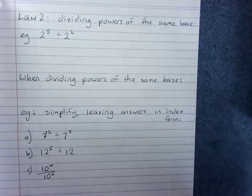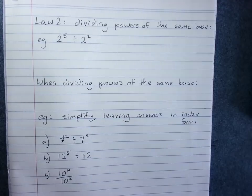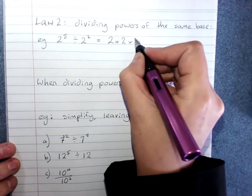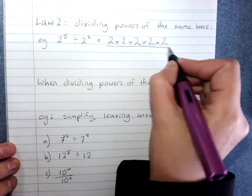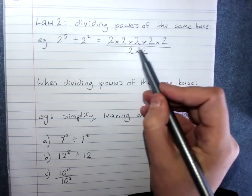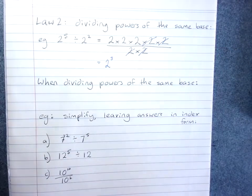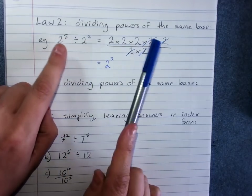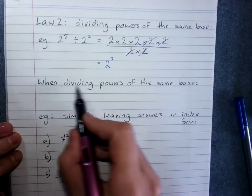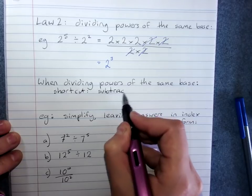Index law 2 is dividing powers of the same base. For example, 2 to the power of 5 divided by 2 to the power of 2. In the same way, let's expand that to see what happens. You could always solve these by expanding — it just takes too long, so we might as well have a shortcut. We know that when multiplying the same thing on the top and bottom of a fraction, we can cancel any that are the same. That leaves us with 2 to the power of 3. The shortcut when dividing powers of the same base is to subtract the indices.